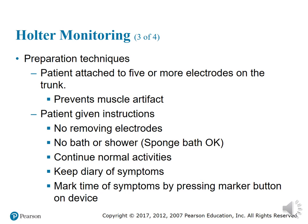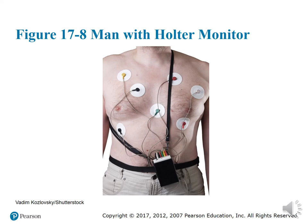Patients should perform normal activities and are encouraged to be a little more active than usual to get enough data from different activities. They should keep a diary of symptoms throughout the monitoring period and mark the time of symptoms by pressing the marker button on the device. The electrode placement on the body provides readings from various angles of the heart. Refer back to chapters 3 and 14 for lead placement information.